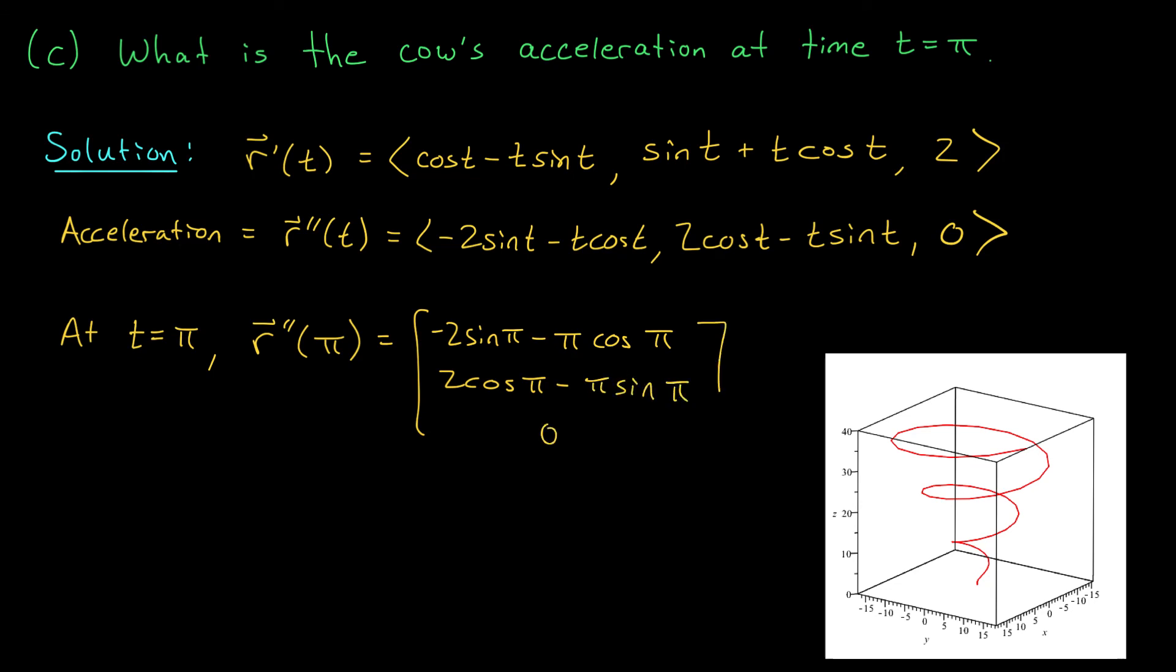Now, just like before, we can simplify this quite a bit. Sine pi is 0, cos pi is minus 1. So, we can throw out our sine terms, and we should simply be left with pi, minus 2, 0. That's the cow's acceleration at time t equals pi seconds.